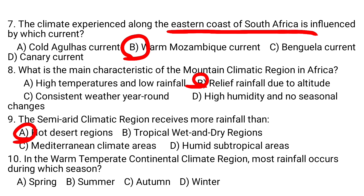Question number ten: In the warm temperate continental climate region, most rainfall occurs during summer. For Mediterranean climate regions, rain falls in winter. But for the warm temperate continental climate region, the answer is D — summer.